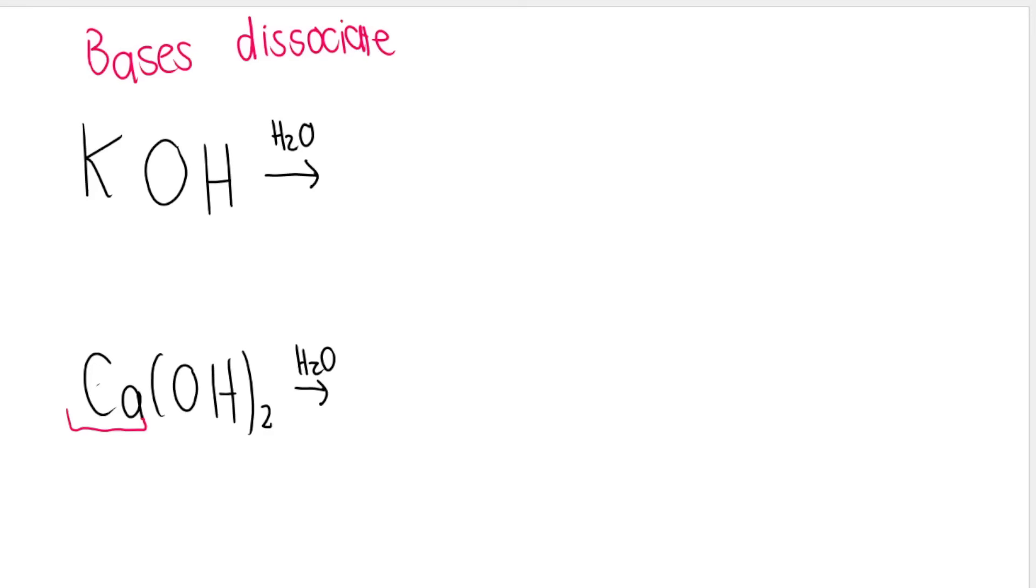And how would you show these bases dissociating? Remember, bases dissociate in water. You draw the H2O on top of the arrow like that. What it means is that these break up into its ions. So the potassium ion is K+, and the hydroxide ion is OH-. Just like that.